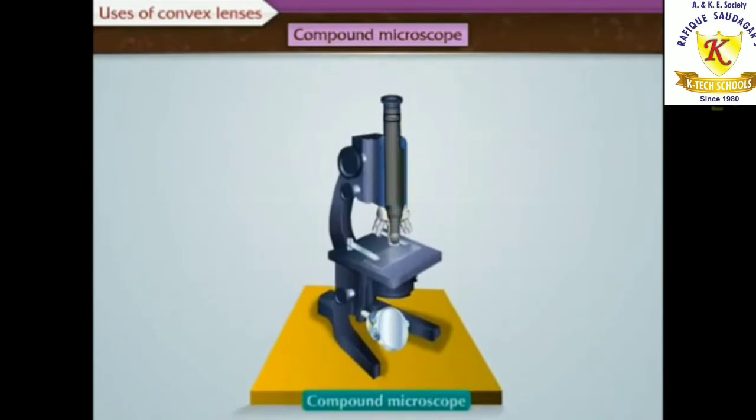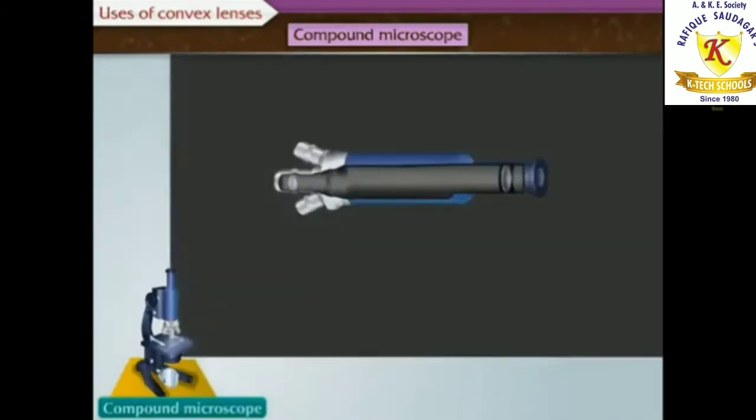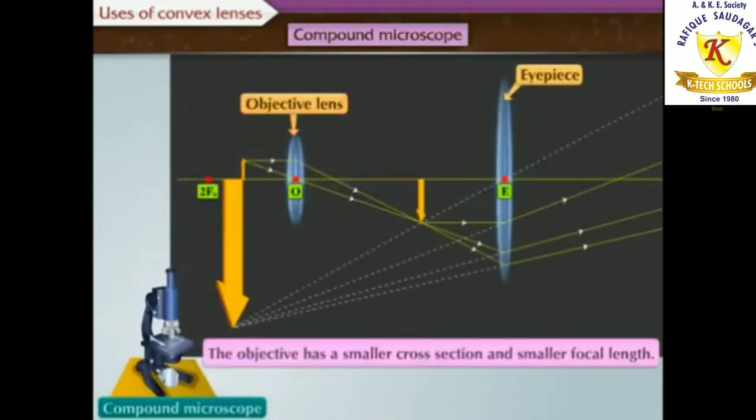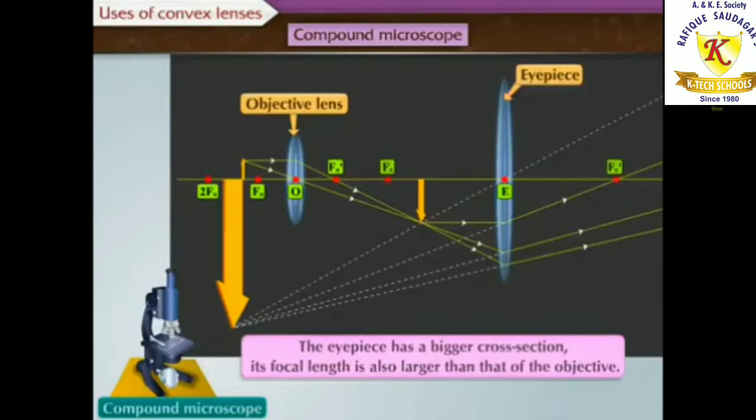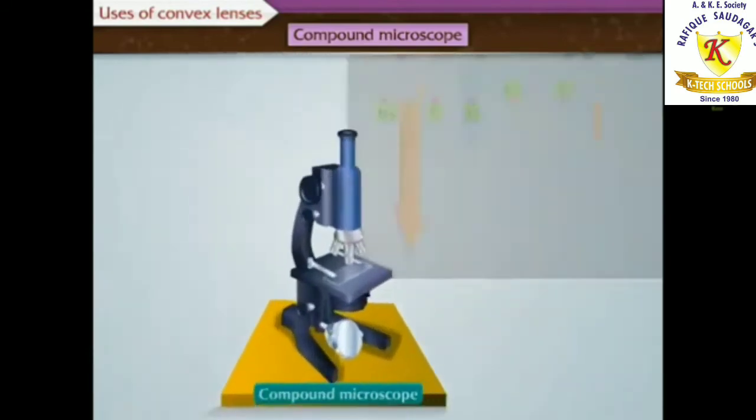First, a compound microscope is made up of two lenses: an objective and an eyepiece. The objective has a smaller cross section and smaller focal length. The eyepiece has a bigger cross section. Its focal length is also larger than that of the objective.